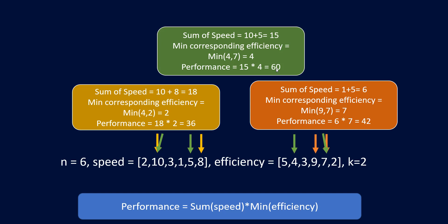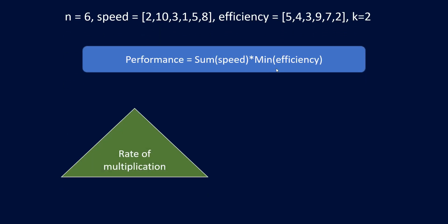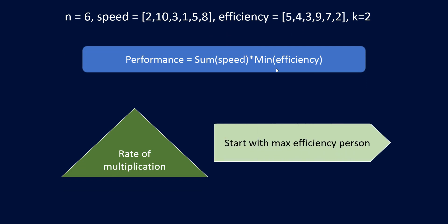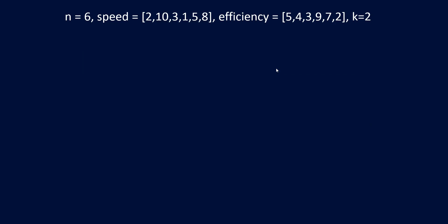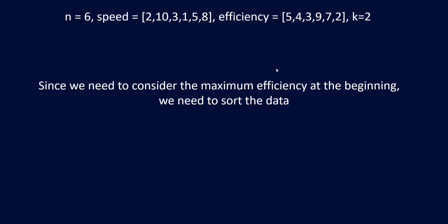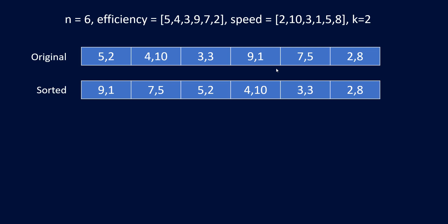We need to consider both, but one thing we definitely know is that the multiplication factor plays a major role in maximizing the answer. So what we are going to do is try to increase the rate of multiplication by starting with the person having the maximum efficiency. Since we need to start with the maximum efficiency person, we need to sort the data in descending order of efficiency.